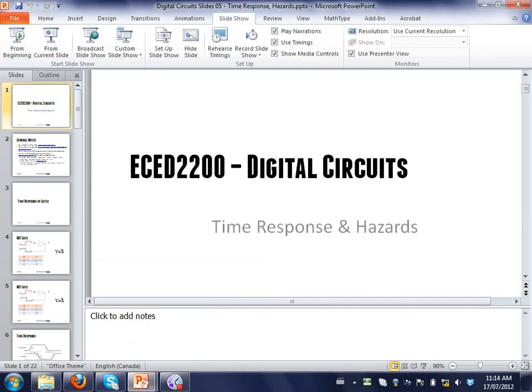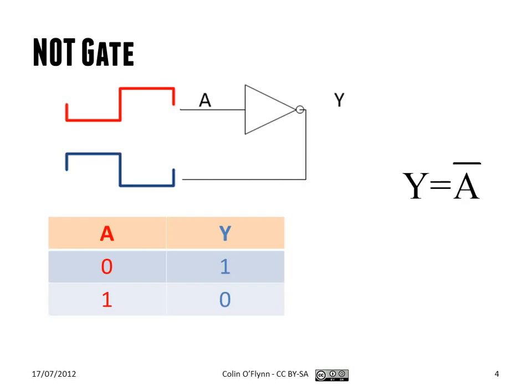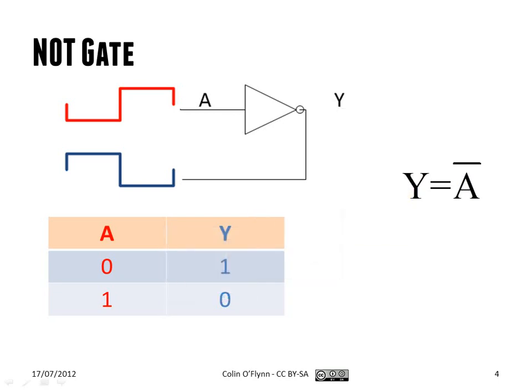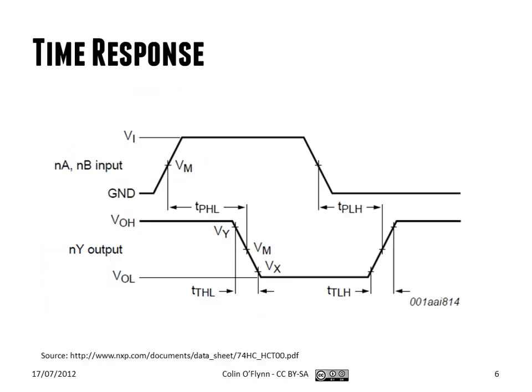The next thing we talked about was the time response of gates. Gates naturally have a bit of delay when something's going through it. So we showed this example before, where we have an input waveform in time and an output waveform in time. They're perfectly synchronized. In real life, that's not the case. The output changes a tiny bit after the input changes. And you can get those values from datasheets.